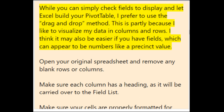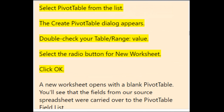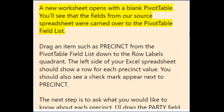Open your original spreadsheet and remove any blank rows or columns. Make sure each column has a heading and that cells are properly formatted for their data type. Highlight your data range, click the Insert tab, select the PivotTable button from the Tables group, then select PivotTable from the list. The Create PivotTable dialog appears — double check your table/range value, select the radio button for New Worksheet, then click OK. A new worksheet opens with a blank pivot table.